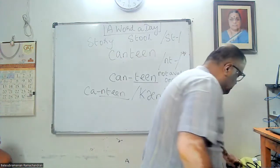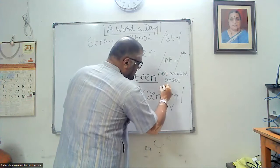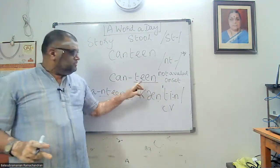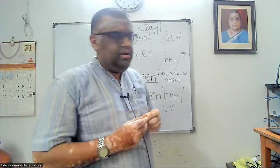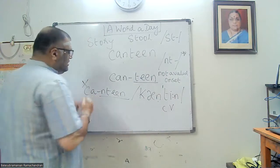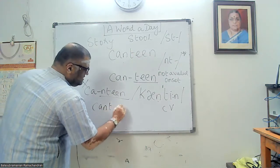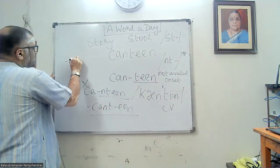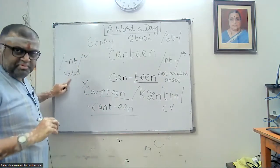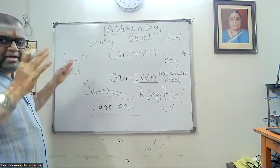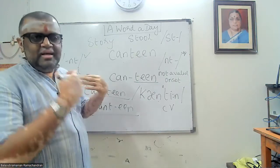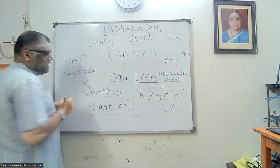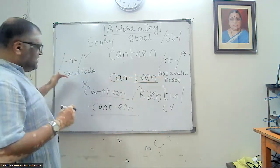So canteen — and since this is how we mark the stressed syllable — 'teen' is the stressed syllable. It cannot divide itself any other way. However, 'nt' as a coda is valid — 'nt' is a valid coda. By valid, we mean it is permissible, it is allowed in English. We'll talk about this validity and legal allowance in more detail later. So 'ntr' is not a valid onset, but 'nt' is a valid coda.